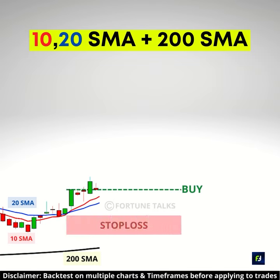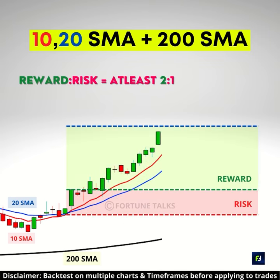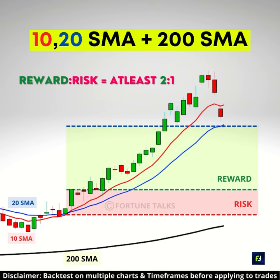Place your stop loss below the low of that bullish reversal candlestick, and set your target with a reward to risk of at least 2 to 1.